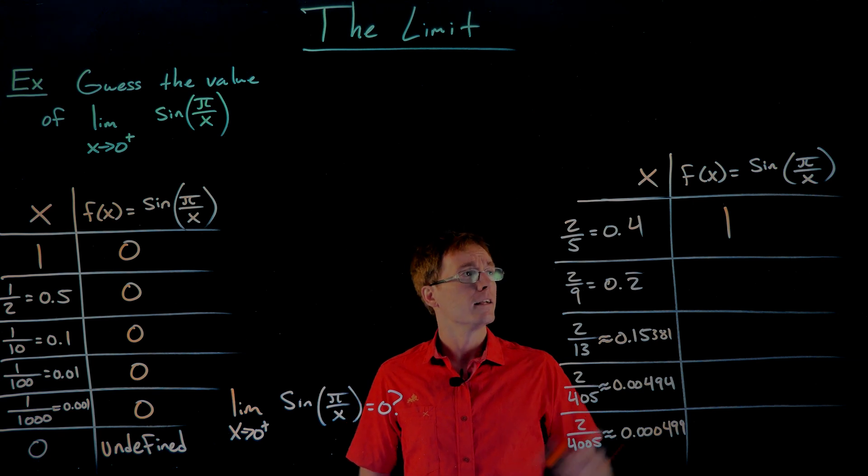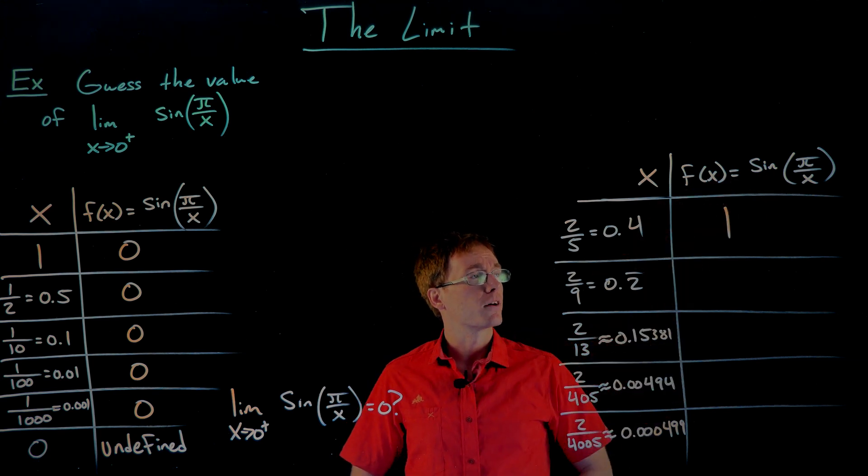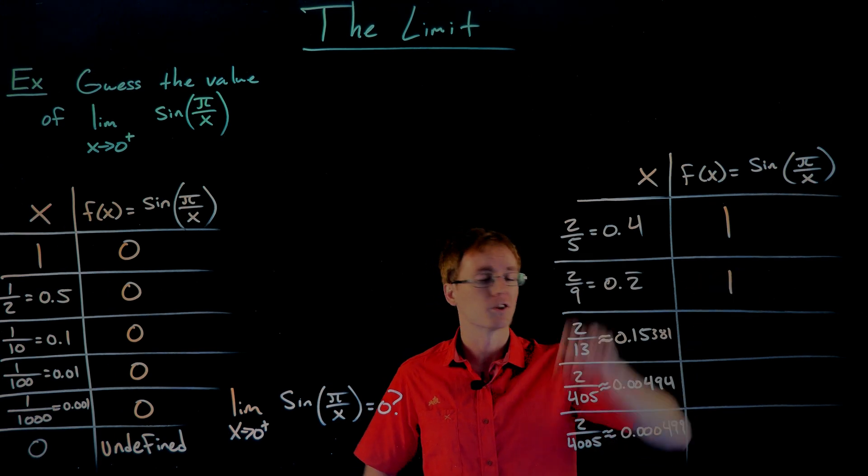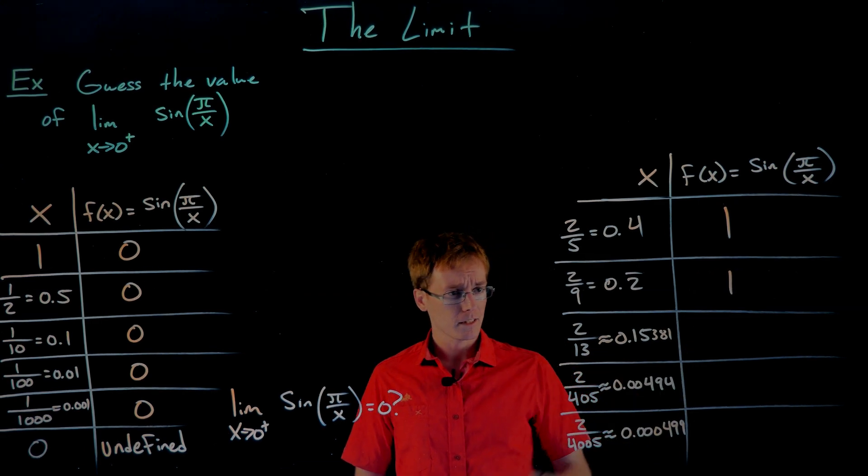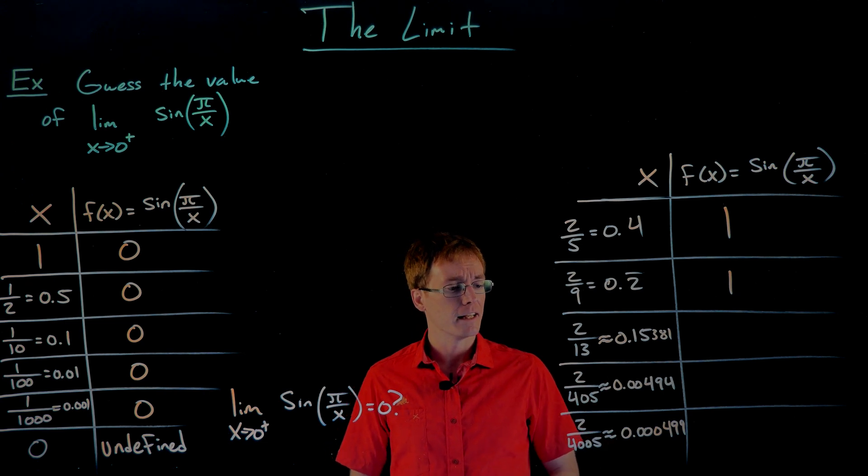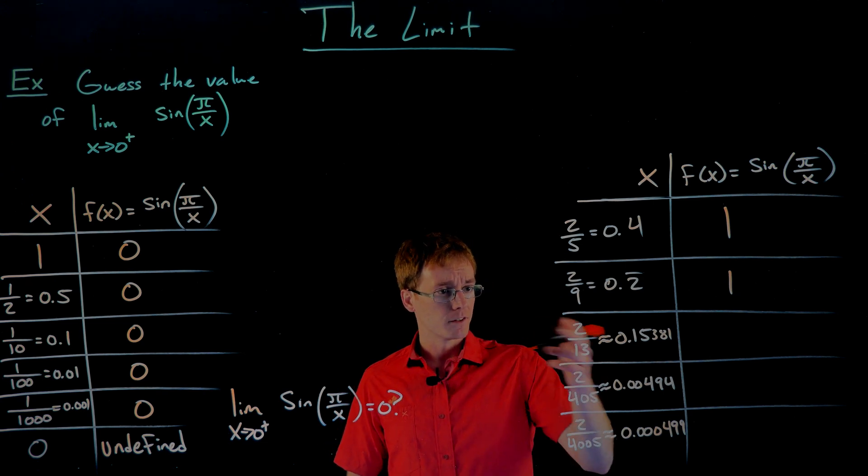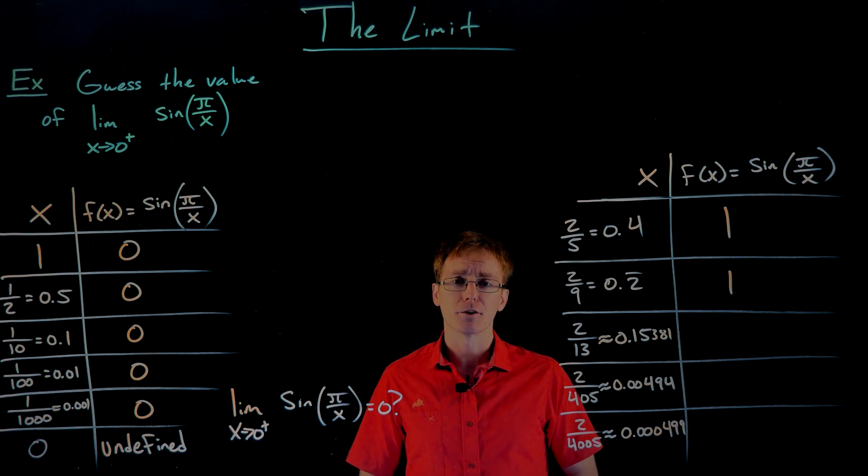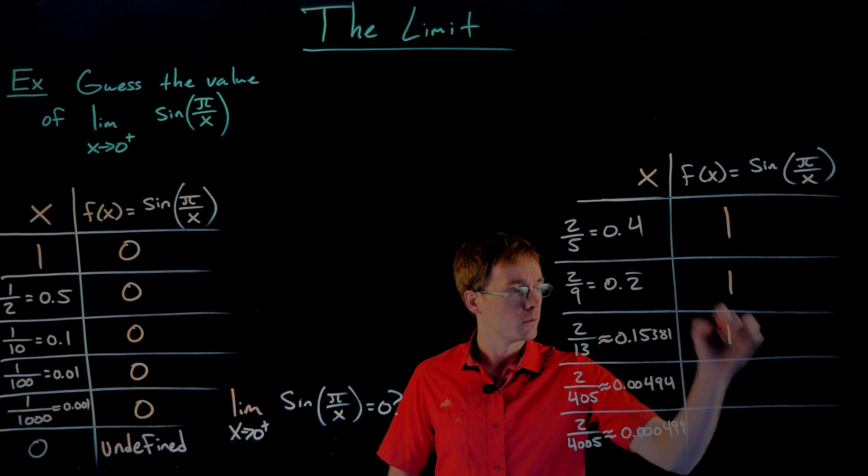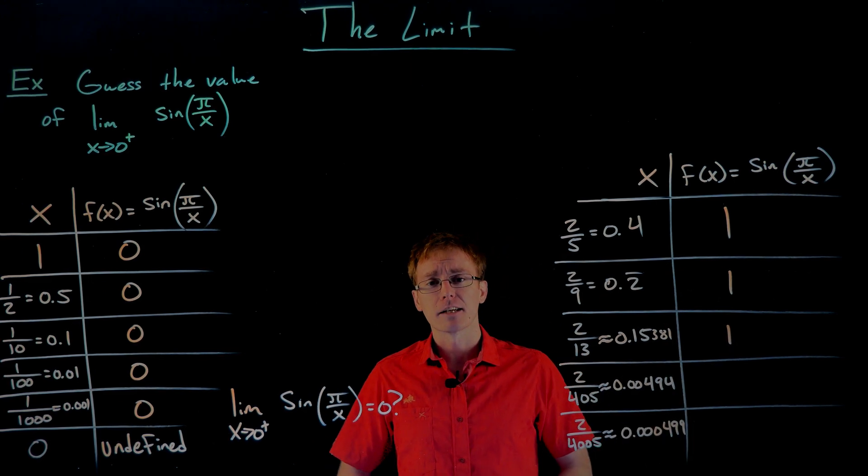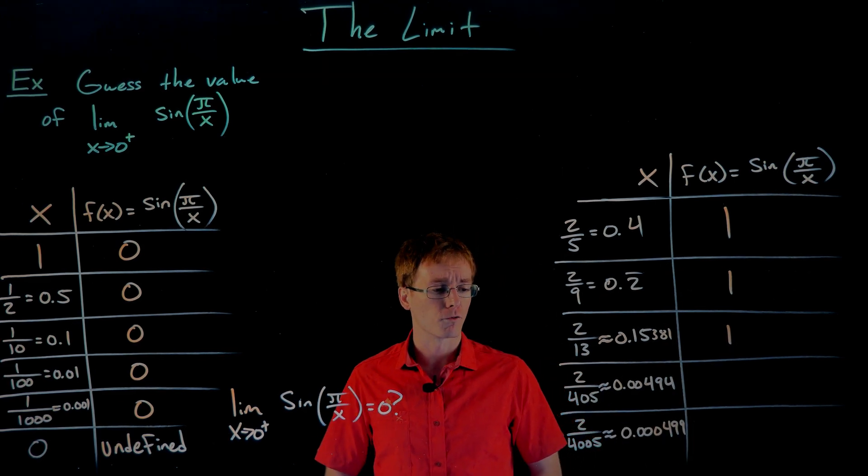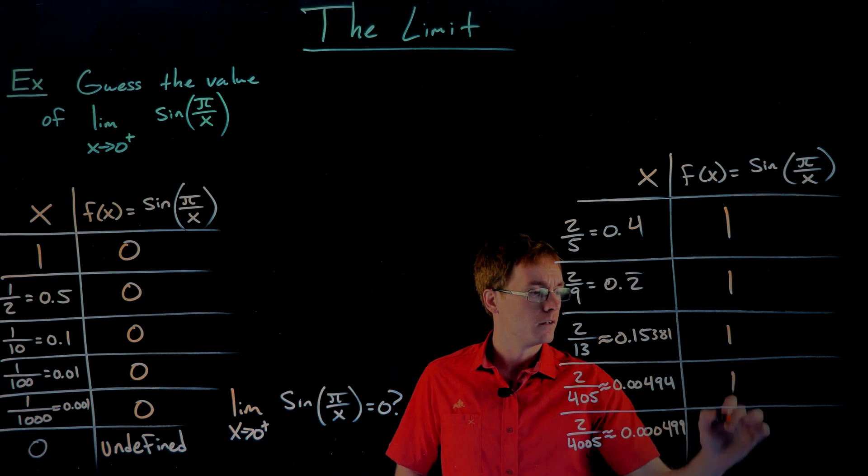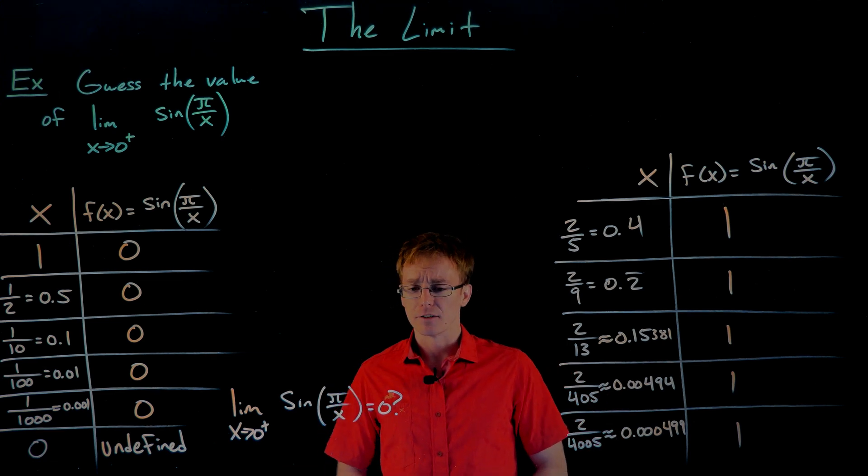Next, let's plug in two ninths inside of our function. After we plug that in, it'll simplify to sine of nine pi over two, which is also equal to one. If we do this for our remaining entries in our table, sine of pi over two thirteenth simplifies to sine of thirteen pi over two, which is also one. You can probably guess what happens for the next two entries. If we plug in two over four hundred and five or two over four thousand and five, we get one as our output each and every time.